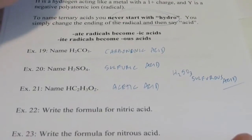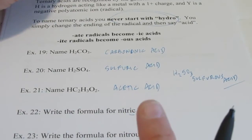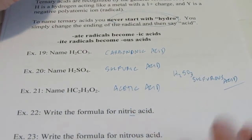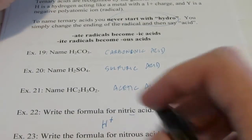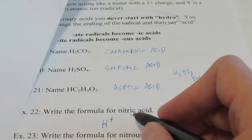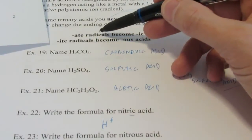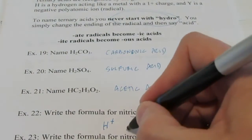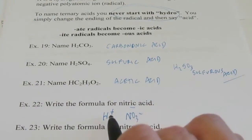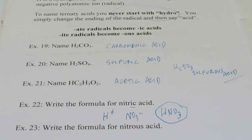Now what if I had to write the formula and I gave you the name? Let's start with nitric acid. Notice it does not start with hydro — if it started with hydro, it would be binary. So I know it's a ternary acid. There's an H acting like a metal with a 1+ charge, attached to a polyatomic ion. It ends with -ic, which means it came from an -ate polyatomic. Nitrate is NO₃⁻¹. We have H⁺ and NO₃⁻¹ — we need one of each — and that is HNO₃, nitric acid. We don't need to put an Aq after it like we do for binary acids.